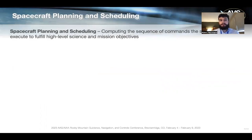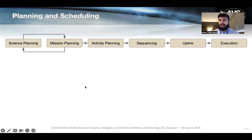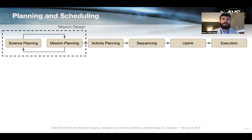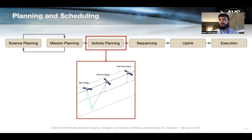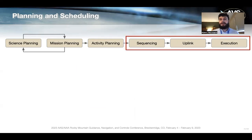So, motivation. Today I'm talking primarily about spacecraft planning and scheduling, which is really just computing the sequence of commands that a spacecraft must execute to fulfill high-level science and mission objectives. Traditionally, planning and scheduling is a ground-based process where execution is open loop onboard the spacecraft. You have some iteration during mission design between science and mission planning. The outputs — science objectives, trajectory, spacecraft specification — are passed to an activity planning block, which computes a sequence of actions. For example, first you heat an instrument, then point it at a target, then command an image. This activity plan is input into sequencing software that generates low-level commands uplinked and executed open loop onboard the spacecraft.